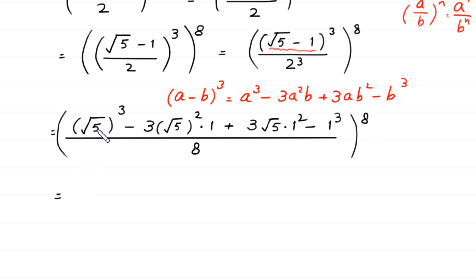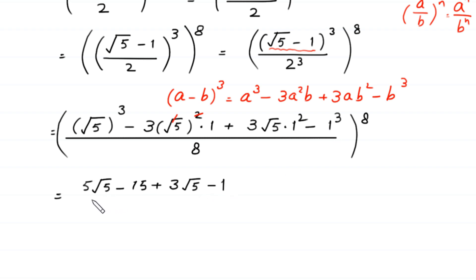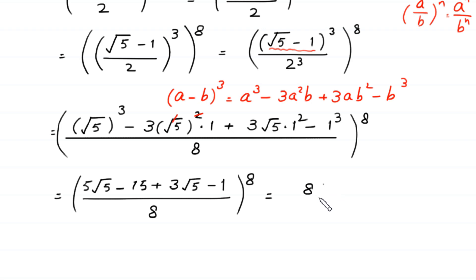Combining like terms: 5√5 + 3√5 = 8√5, and -15 - 1 = -16. So the numerator is 8√5 - 16, divided by 8, whole to the power 8. We can factor out 8 from the numerator: 8 as a common factor leaves (√5 - 2) in the bracket, divided by 8, whole to the power 8. The 8 in the numerator cancels with the 8 in the denominator, leaving (√5 - 2) whole to the power 8.